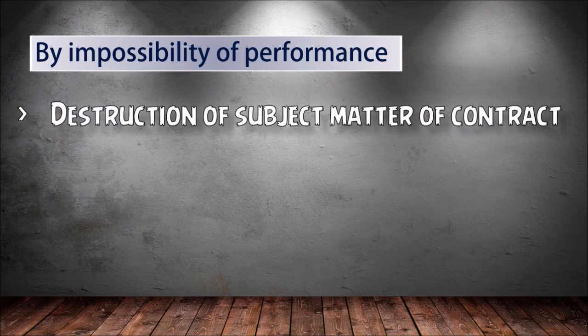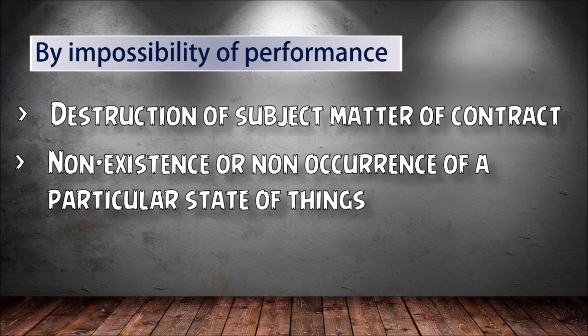Discharge of contract by impossibility of performance. This can occur by destruction of subject matter: when the subject matter of a contract is destroyed without any fault of the parties, performance becomes impossible and the contract is discharged. Also, non-existence or non-occurrence of a particular state of things: sometimes a contract is entered into on the basis of a particular state of things which ought to have occurred but does not occur, and the contract gets discharged.